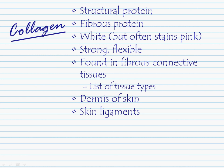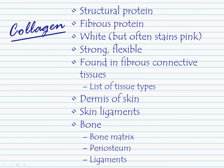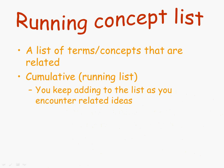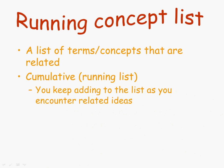Then you learn about collagen's role in the skin — forming skin ligaments and the dermis. As you proceed through your A&P course, you'll learn about collagen's role in bone and the various parts of the bone organ, or other parts of the skeleton. As time goes on, you'll just keep running into collagen. The idea is that you want to run this list — keep adding to it as you encounter related ideas.